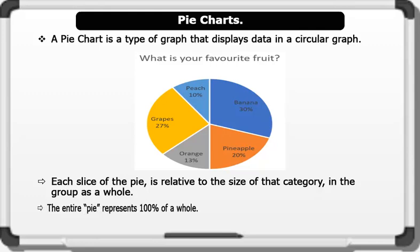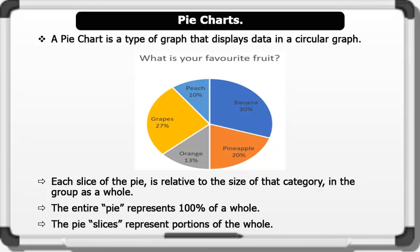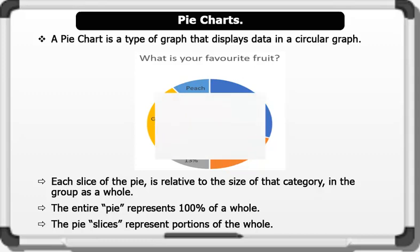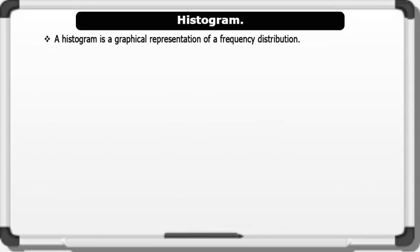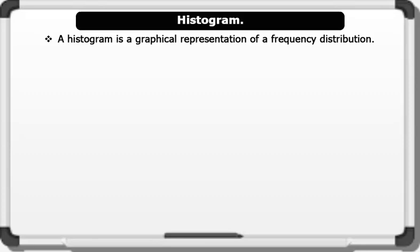Histogram. A histogram is a graphical representation of a frequency distribution. It is like the bar chart which consists of a set of rectangles. Below is a histogram representation of data.